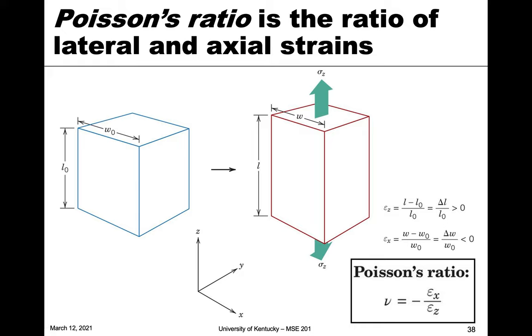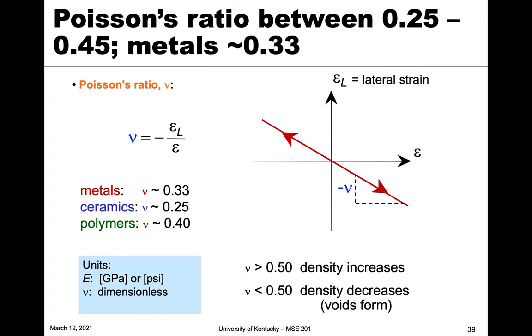So that's what Poisson's ratio is. It basically gives us the ratio of those strains. And so let's compare this for some materials.